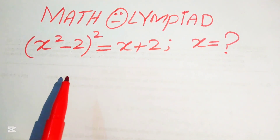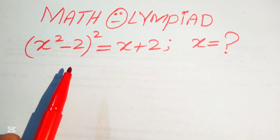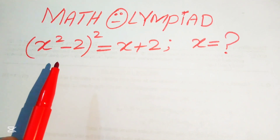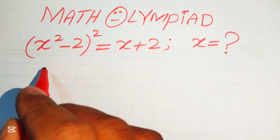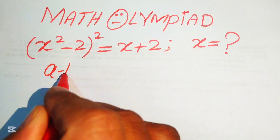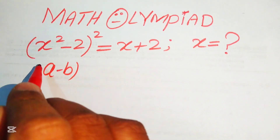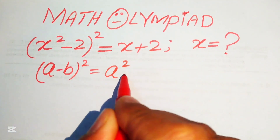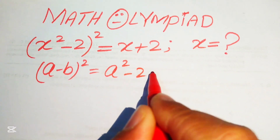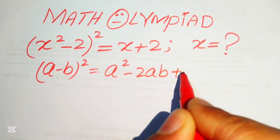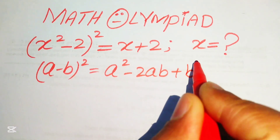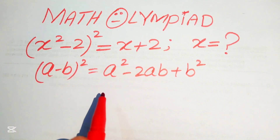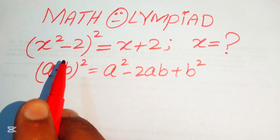We will solve this problem with the help of the algebraic identity. You know that (a - b)² = a² - 2ab + b². We use this formula first.